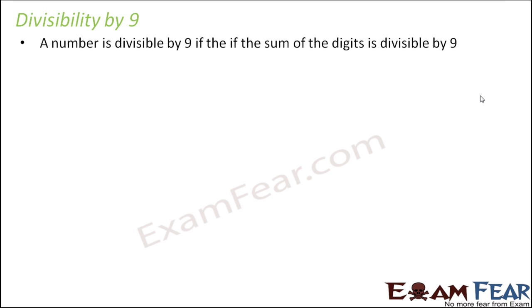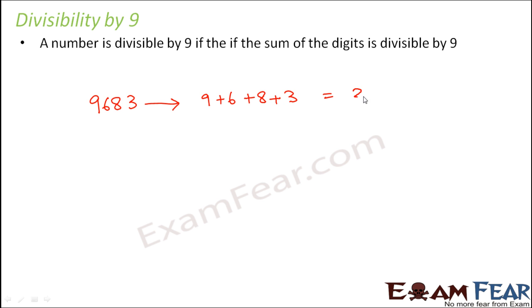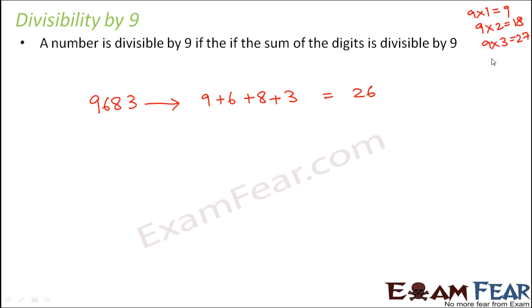Let us look at some examples. Say you have the number 9683 and you have to decide if it is divisible by 9 or not. You add the digits up and the sum comes out to be 26. Now, is 26 divisible by 9? Quickly write down the multiples of 9 — you will see that 26 is not divisible by 9.